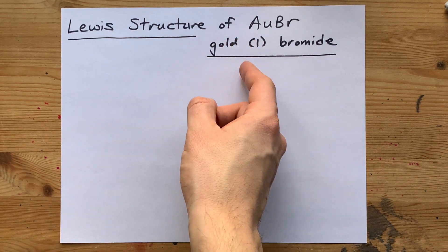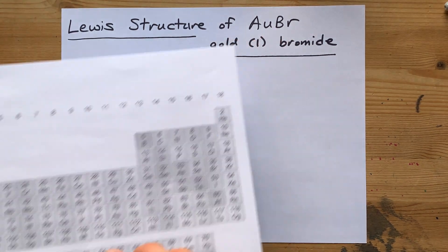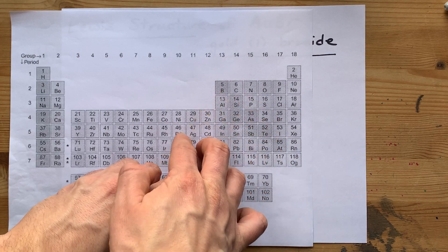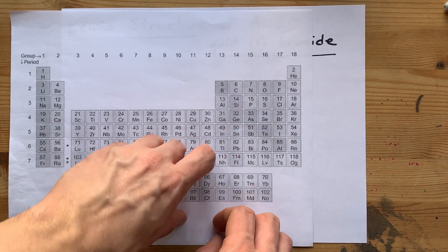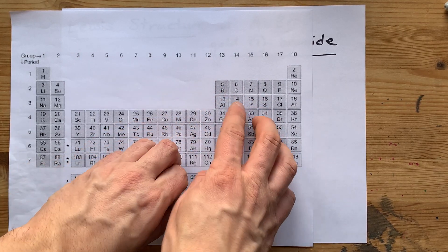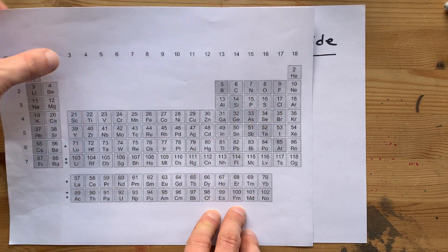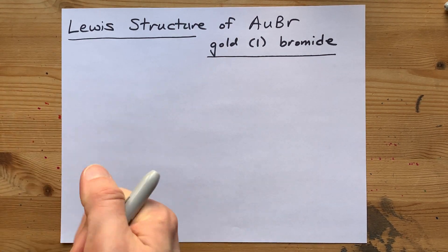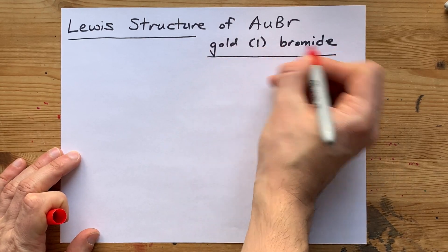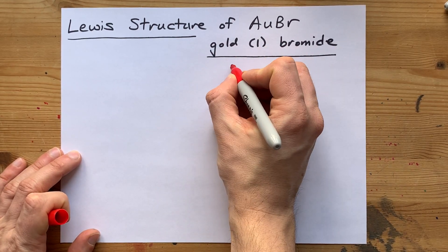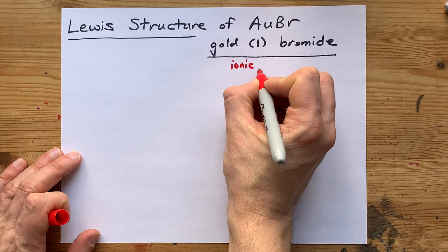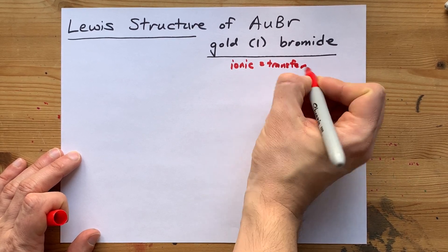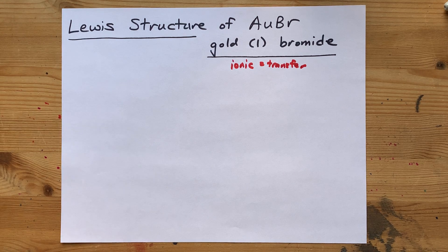Let's look at the structure of gold-1-bromide. Gold comes from the left-hand side of the staircase, so it's a metal. Bromine comes from the right-hand side of the staircase, so it's a non-metal. A metal bonding with a non-metal makes an ionic compound, and that means there is a transfer of electrons from one to the other.